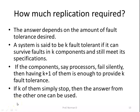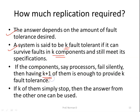How much replication is required? This depends on the amount of fault tolerance desired. A system is said to be k-fault tolerant if it can survive faults in k components and still meet its specification. If components fail silently, having k+1 of them is enough to provide k fault tolerance, since if k of them simply stop, the answer from the remaining one can be used.